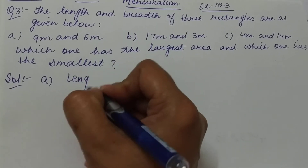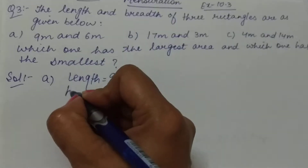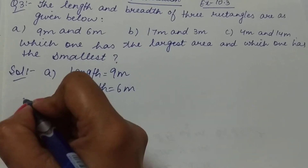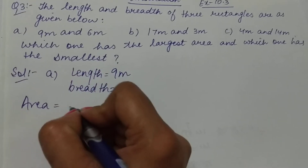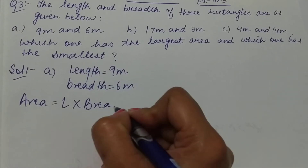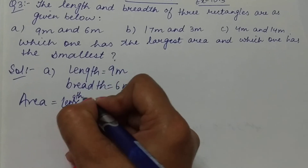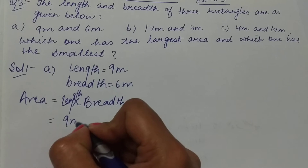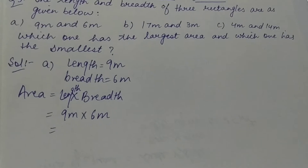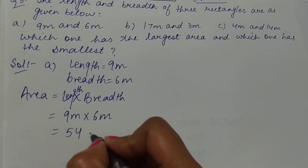For part A, length is 9 meters and breadth is 6 meters. Area of rectangle is length multiplied by breadth, so that is 9 meters multiplied by 6 meters, and 9 sixes are 54 — so this is 54 square meters.